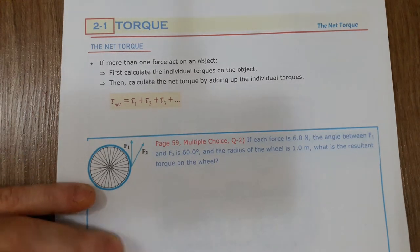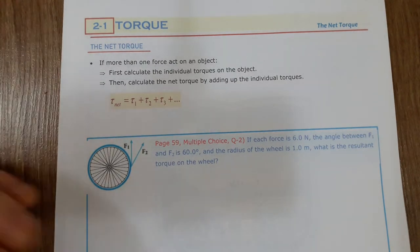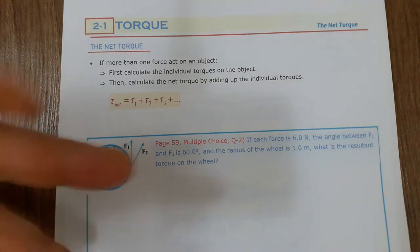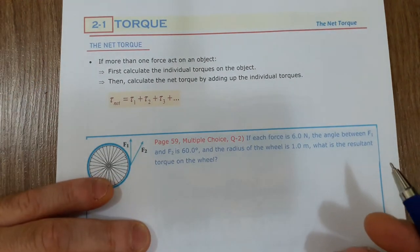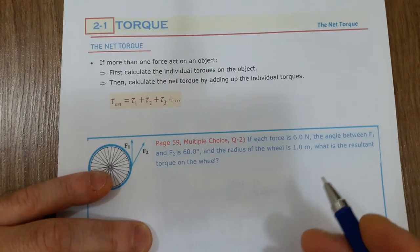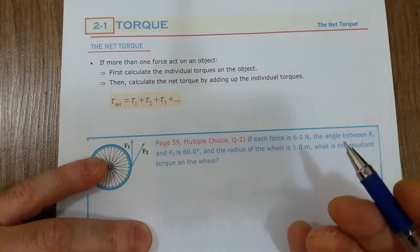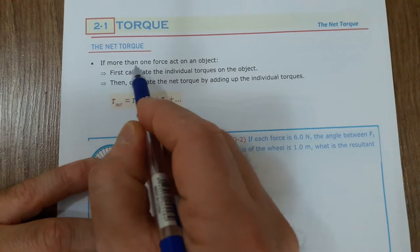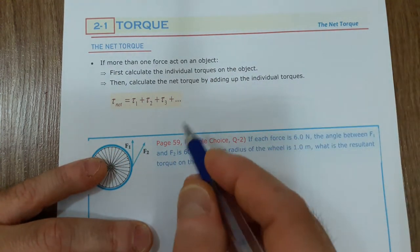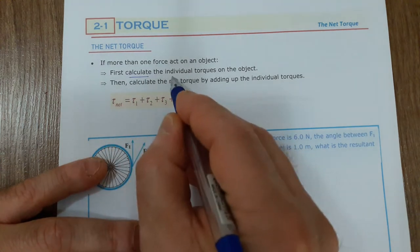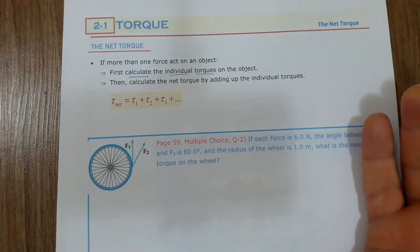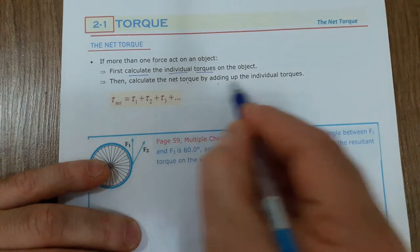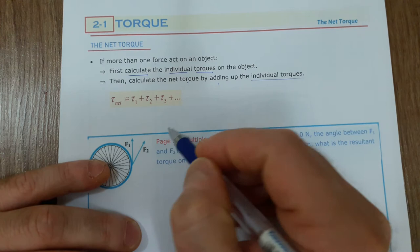But sometimes there can be more than one force acting on an object. In this case you should calculate the net torque. Because torque is a vector quantity, you calculate the resultant torque by adding the torques of individual forces. First calculate the individual torque on the object, then calculate the torque of each force, then calculate the net torque by adding up the individual torques.